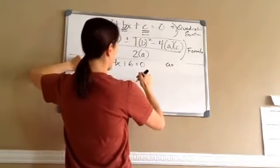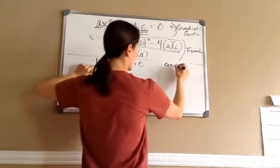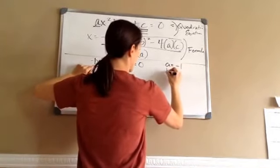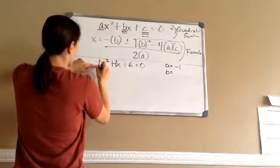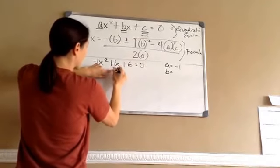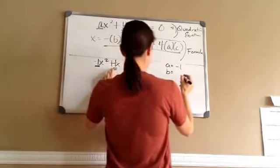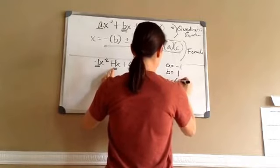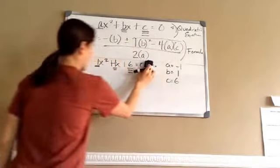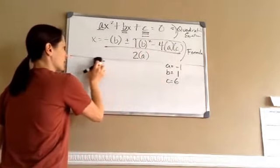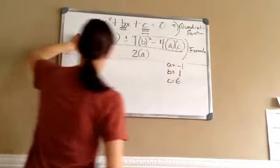Now I'm going to use this formula. My A is negative 1, my B is going to be a 1, and my C is going to be a 6. Now that I have that information, we're going to use this quadratic formula to answer this problem.